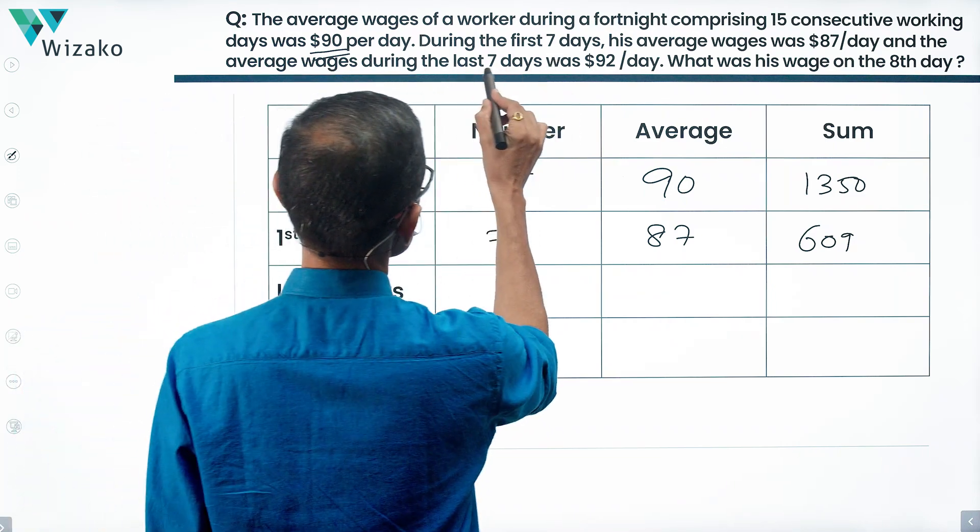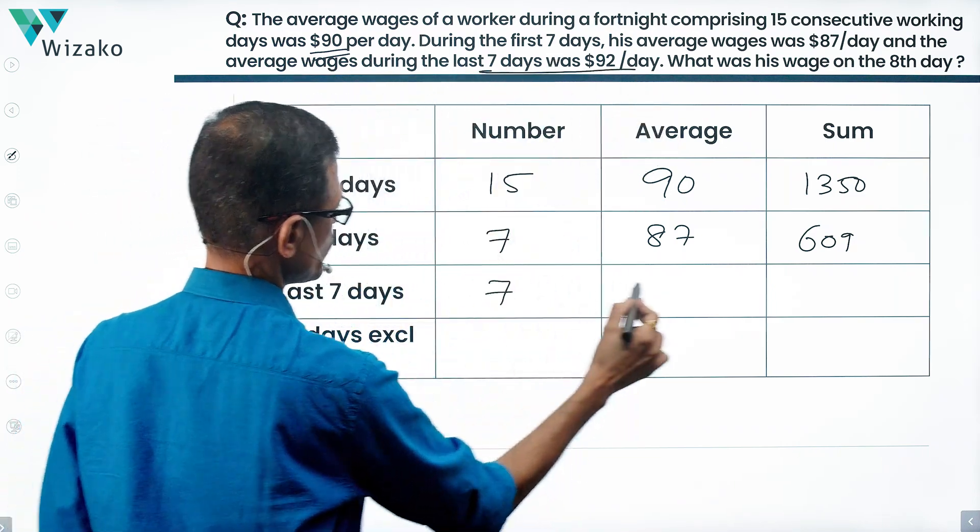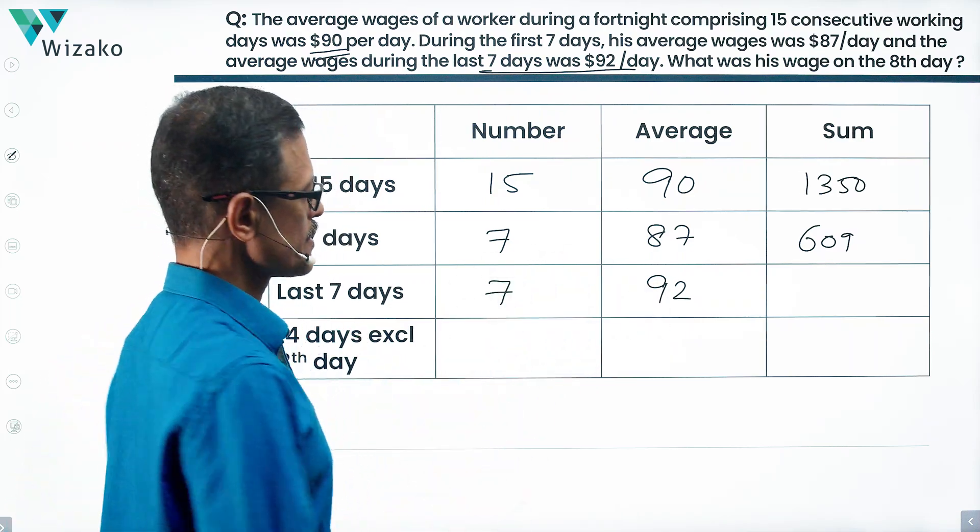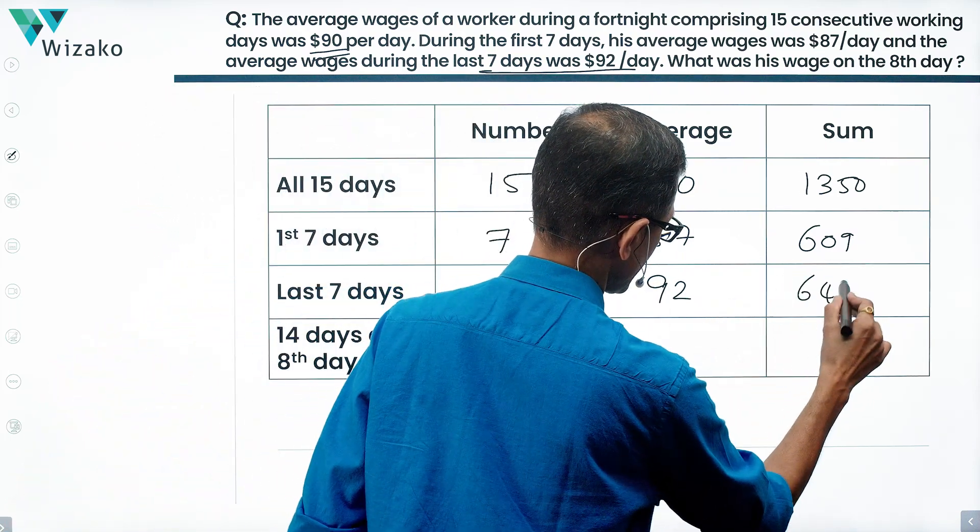Sum of the average wages for the last seven days is equal to 92. 9 into 7 is 63, so 630 plus 14 is 644.